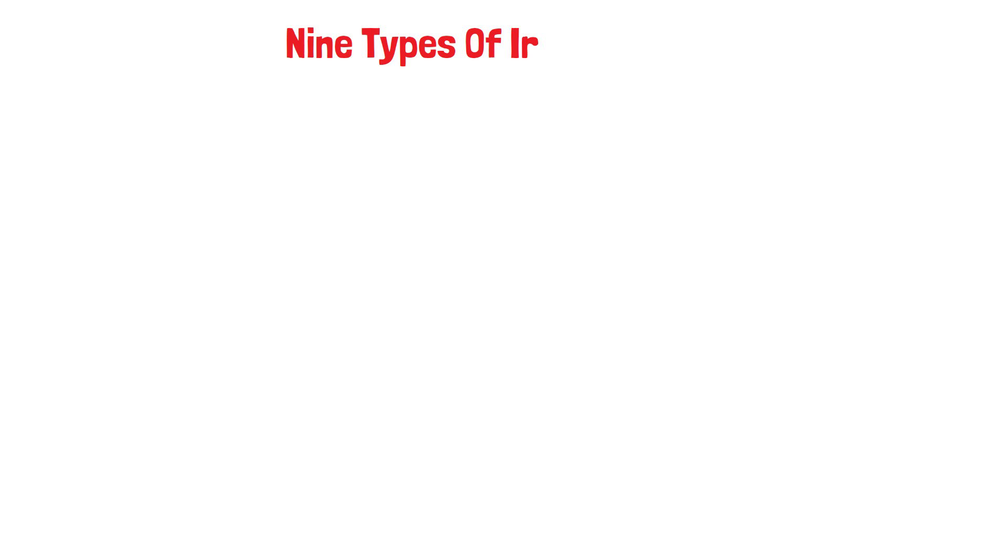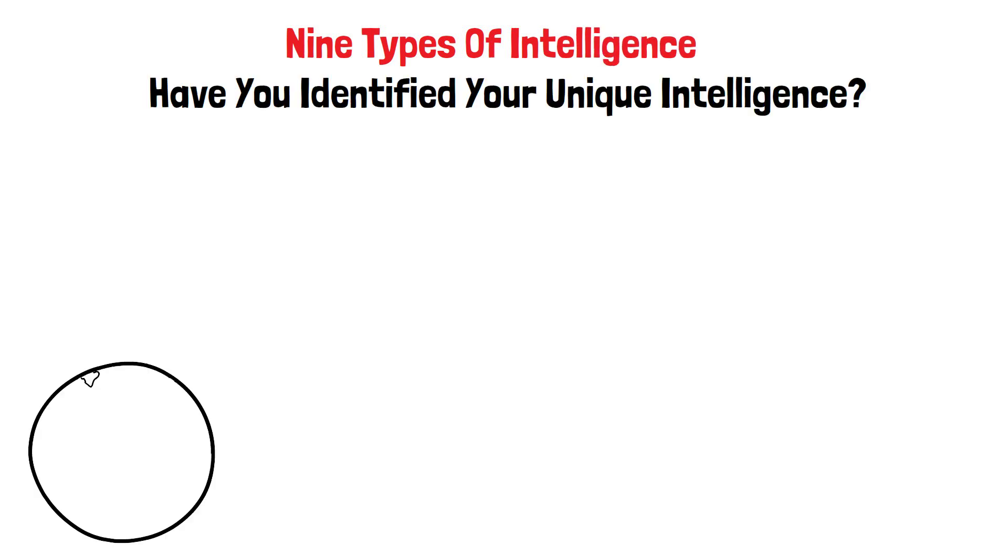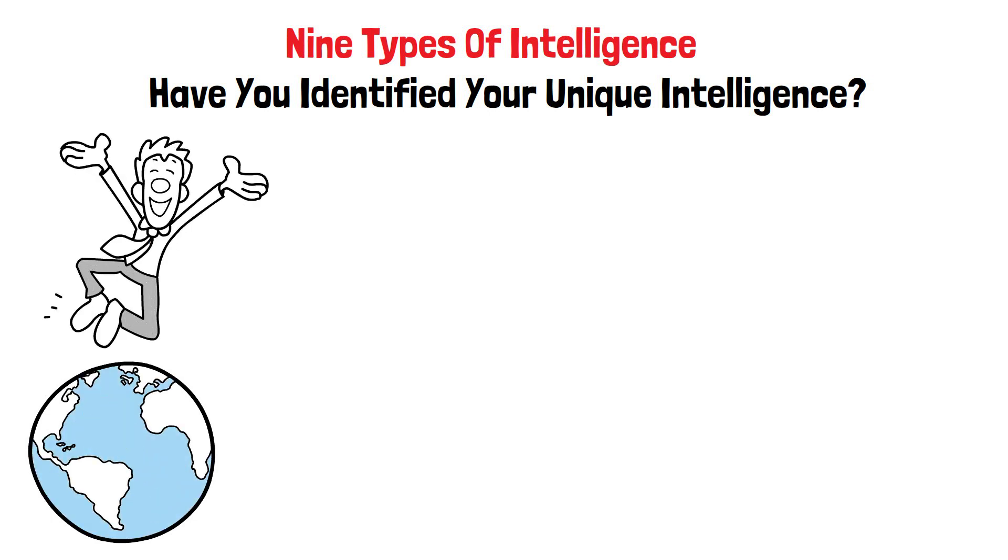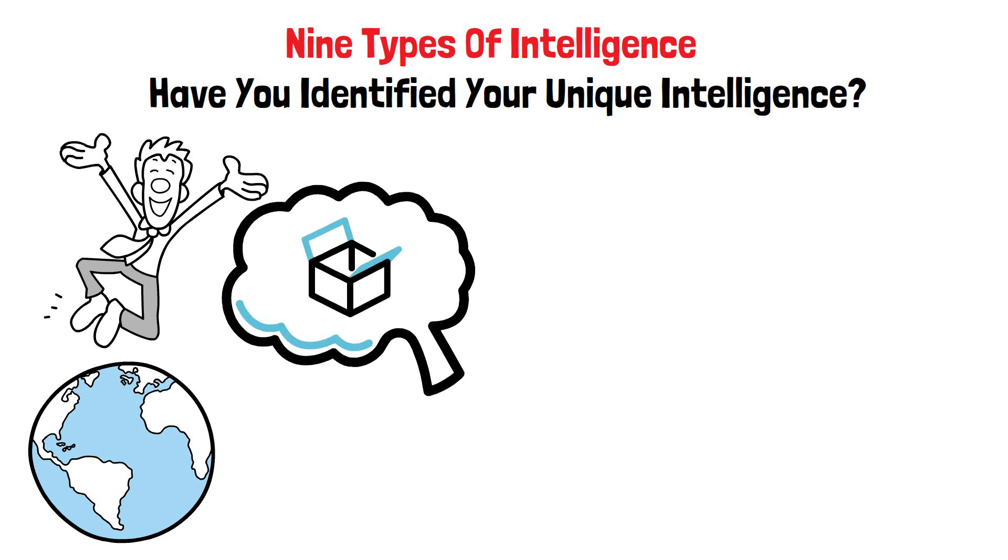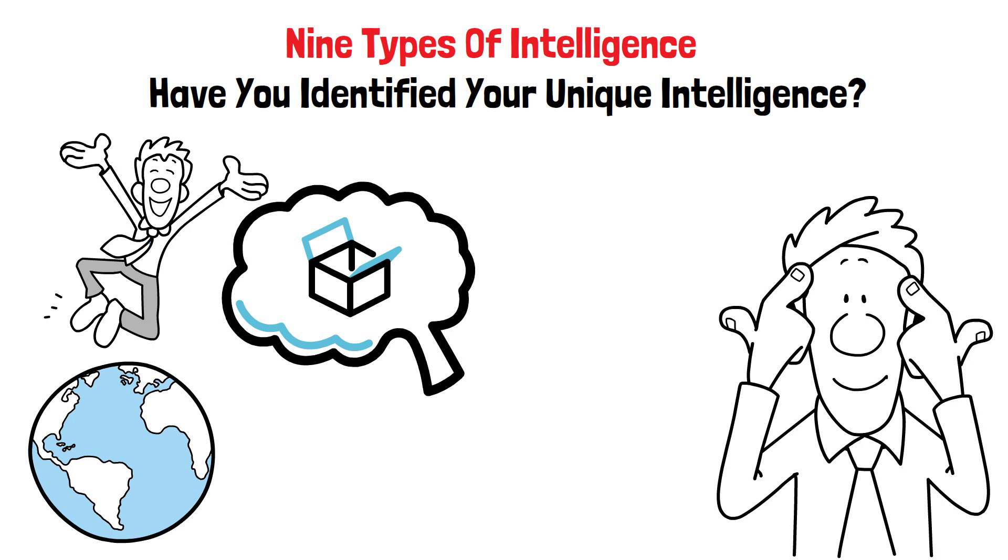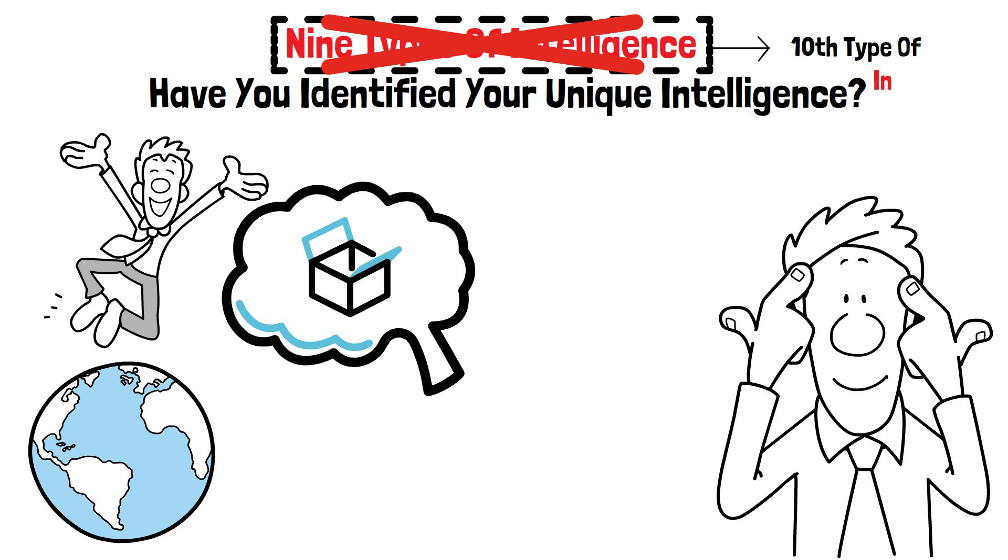As we've delved into the nine types of intelligence, have you identified your unique intelligence? The one that can propel you to create something exceptional? Remember, history shows that great minds are often those who think outside the box and recognize their unconventional field of intelligence. If none of the intelligence categories resonated with you, don't be disheartened. You might be the one to define the 10th type of intelligence, paving the way for others.